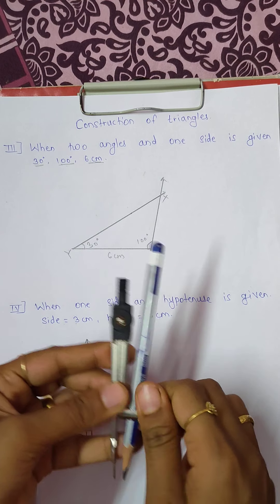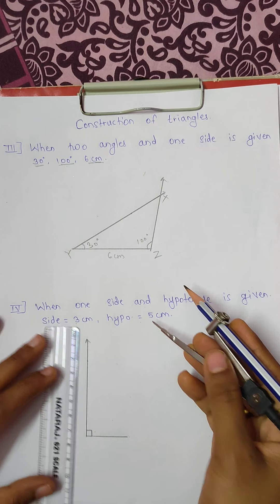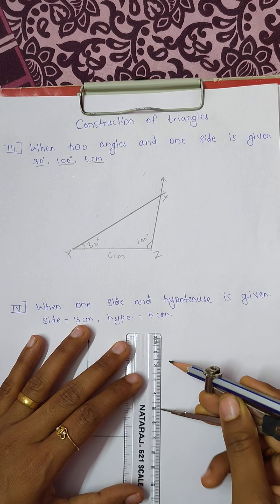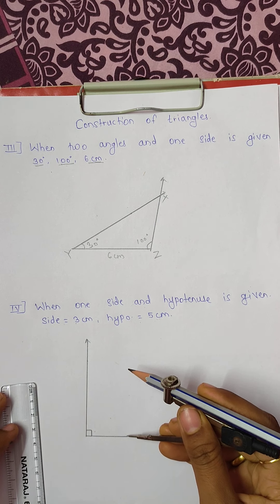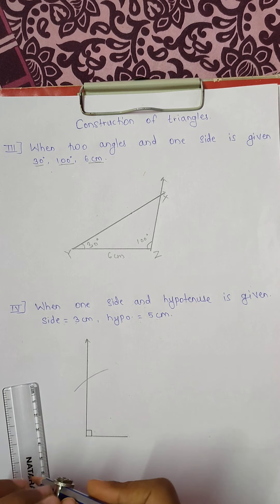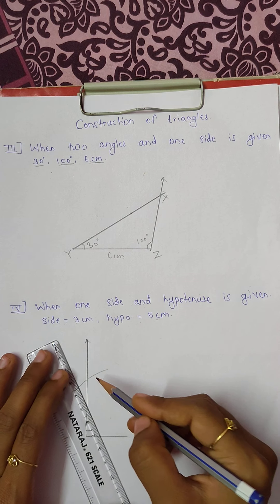So we will take with the help of compass, we will measure 5 centimeters on a scale and place your sharp end, cut the arc and then join the intersection.